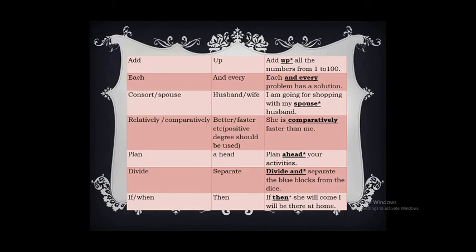'Add up' — add itself has the meaning of combining all things, so using 'up' again is superfluous. The correct form is: 'Add all the numbers from 1 to 100.' 'Each and every' — each indicates every thing, so using 'every' again is superfluous. The correct form is: 'Each problem has a solution.' 'Consort or spouse' — consort means wife or husband, and spouse also means wife or husband, so we should not use both together.